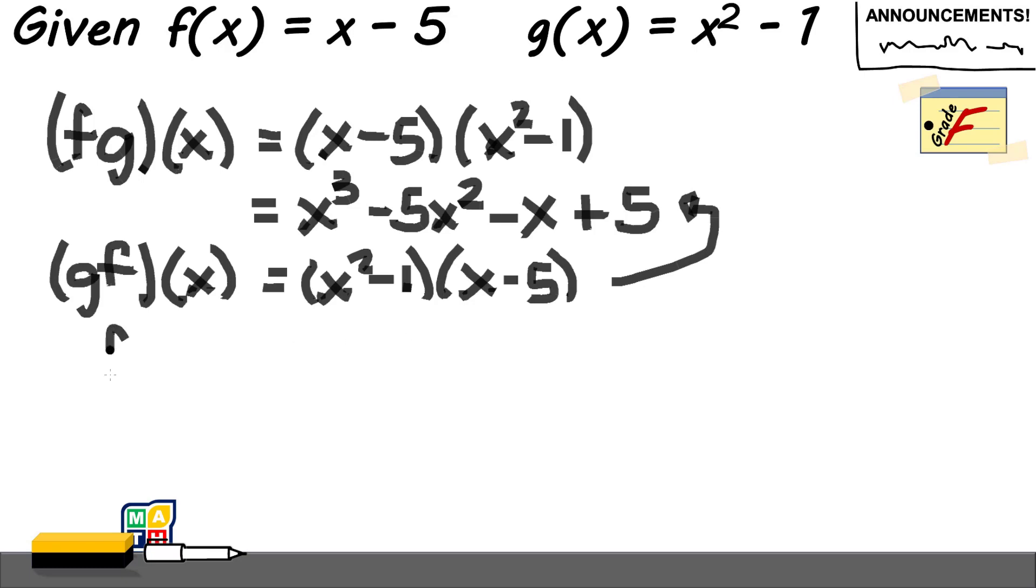Now, what do we get if we have f over g of x? This means we just simply take the quotient of the two functions. So our numerator is the f of x: you have x minus 5 all over your g of x, x squared minus 1.